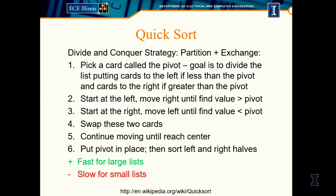You pick a card called the pivot — something you think is somewhere in the middle of the list. The goal is to divide the list by putting cards to the left that are smaller than the pivot and things greater to the right. This is similar to alphabetizing: A through K on the left, L through Z on the right, then subdivide each half further — A through G on the left-left, H through K on the left-right.